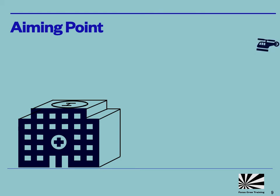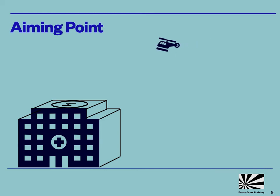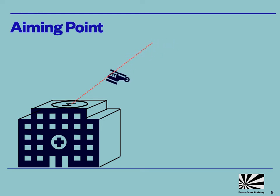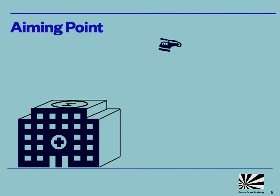An extremely common error which pilots make on helipad approaches is selecting the wrong aiming point. If you draw a path from your eyeline to the centre of the helipad, you will always arrive with the helicopter at the near edge. Just remember that 90% of the helicopter is behind you, so you need to intercept a path to the far edge of the helipad in order to arrive in the middle.